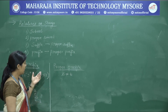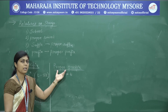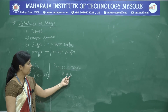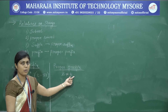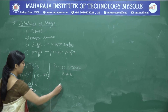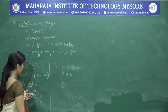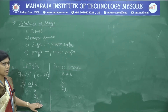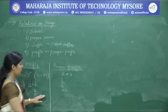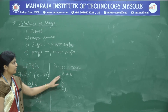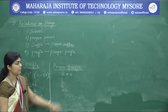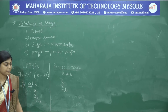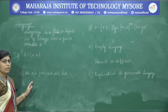A proper prefix satisfies all prefix properties, plus it must also satisfy the condition that the prefix is not an exact match to the original string — s ≠ t. So from the prefixes of 'abb': epsilon, 'a', 'ab', and 'abb' — 'abb' is exactly equal to the original string, so it is not a proper prefix. The proper prefixes are epsilon, 'a', and 'ab'.